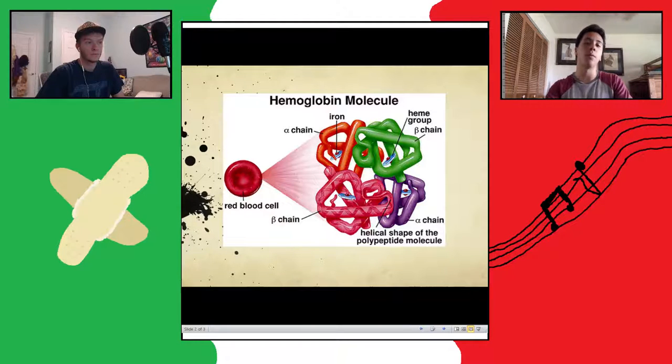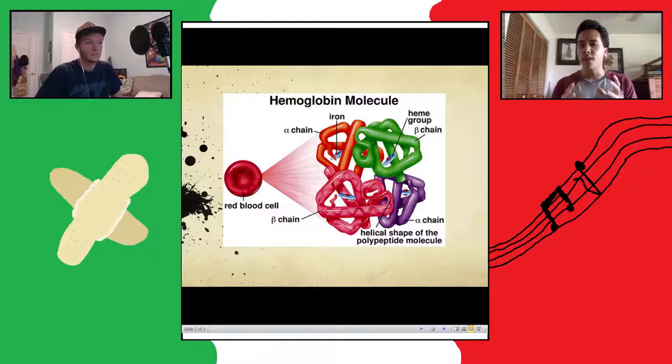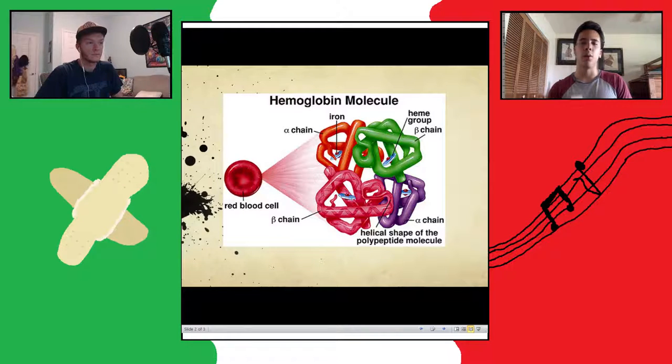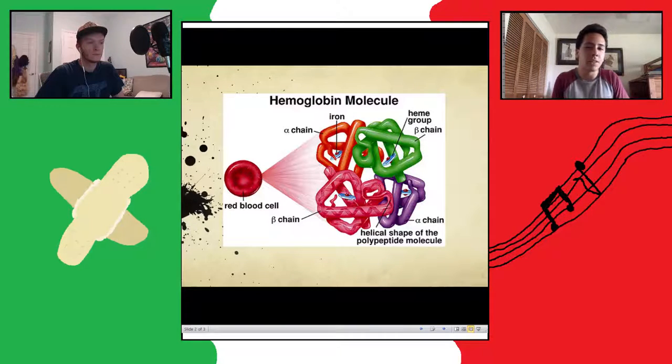What happens with thalassemia is, depending on if you have alpha thalassemia or beta thalassemia, you have a defect in producing either the alpha or beta chains. And we'll first talk actually more specifically about the beta thalassemia, as this one is actually much, much less severe. There are two subtypes within it, major and minor. And of course, as the name would lead on, beta thalassemia minor is the least severe.